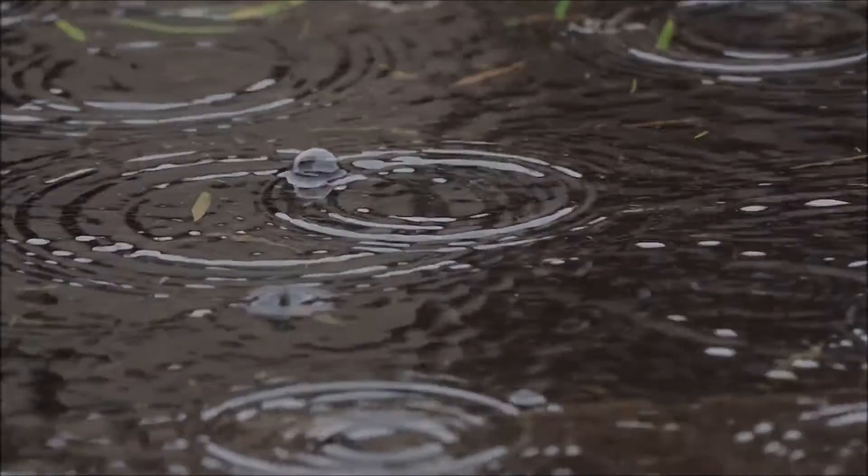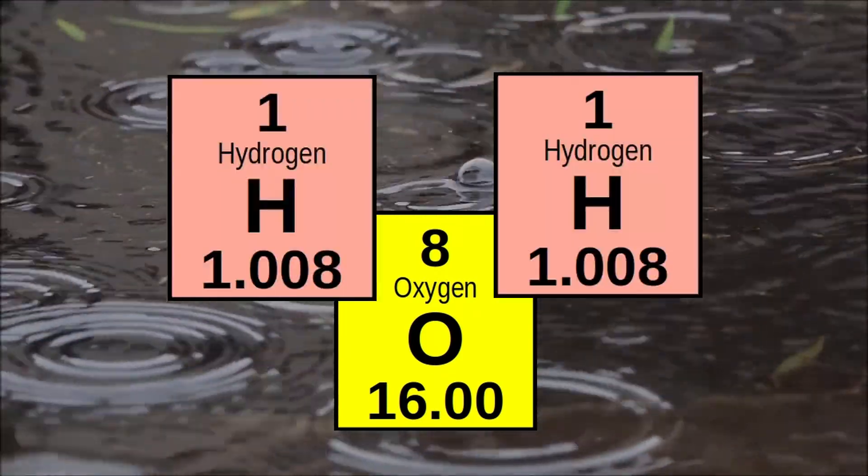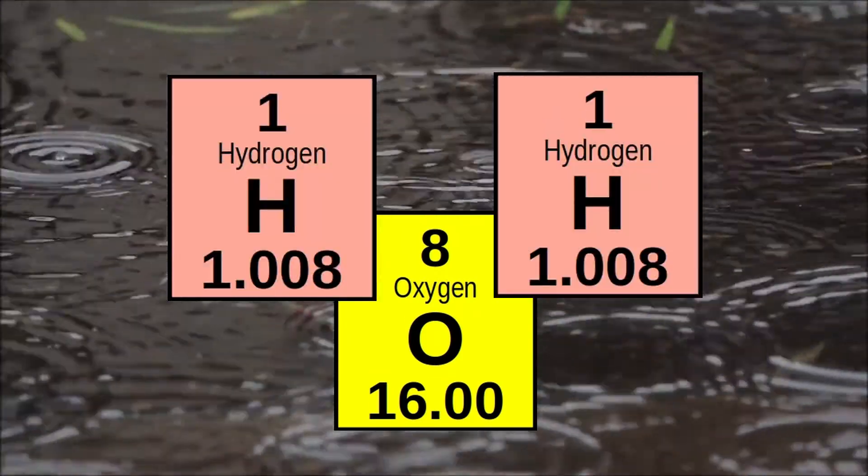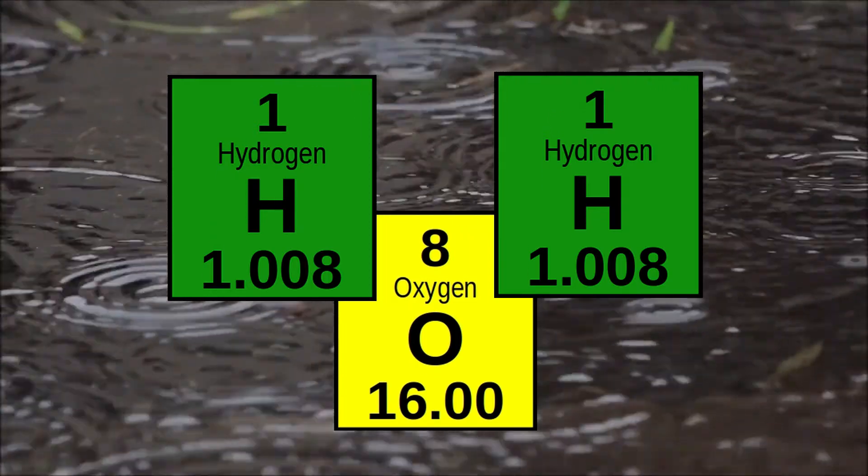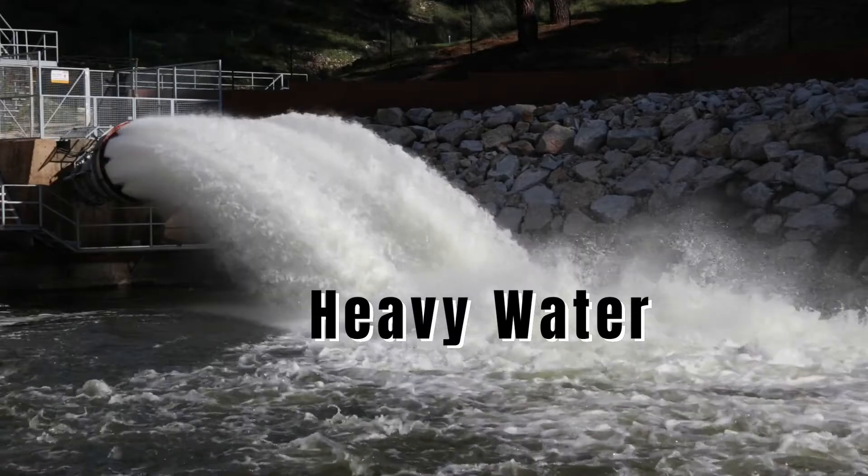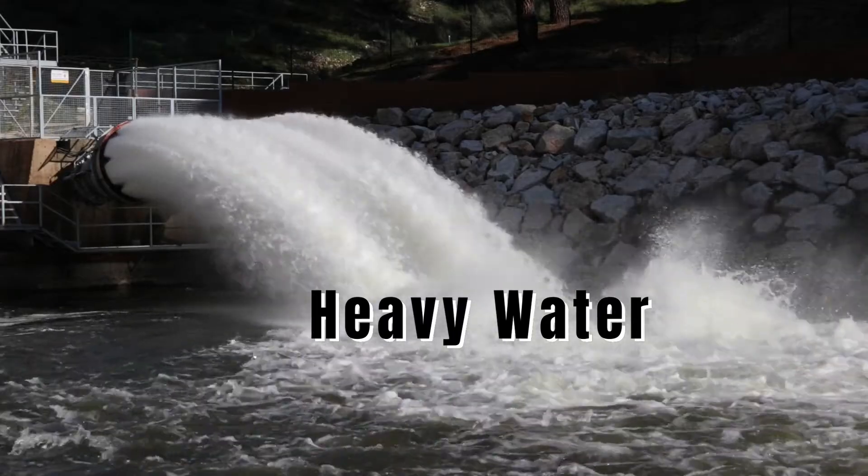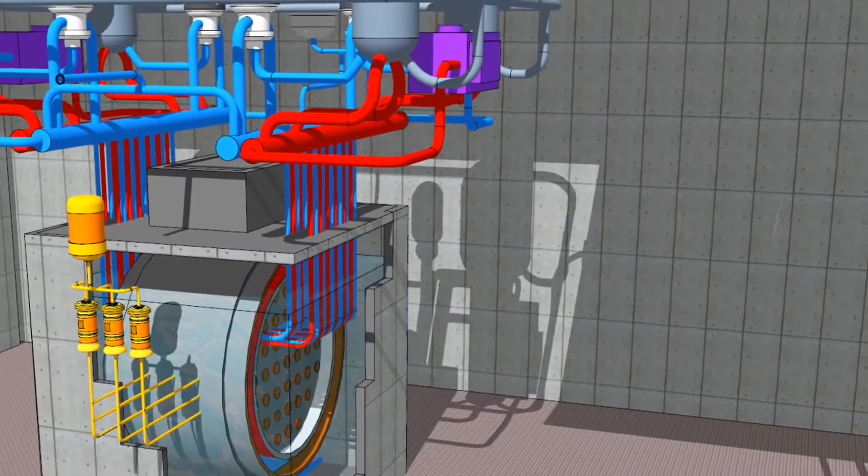Water is made of a single oxygen chemically bonded to two hydrogen. When those hydrogen atoms are replaced with a deuterium isotope, hydrogen with an extra neutron, they become what's called heavy water. It is this heavy water that can be useful in nuclear reactors.